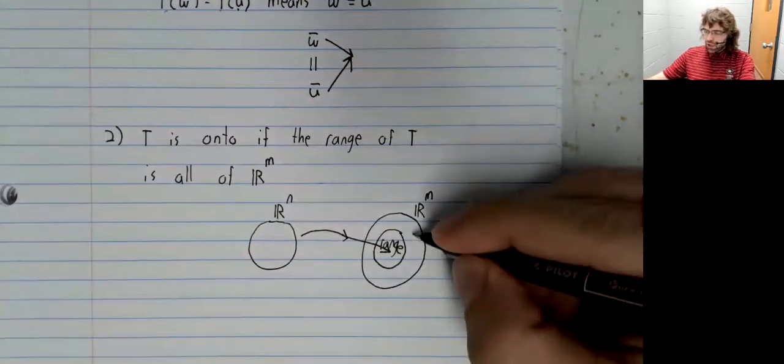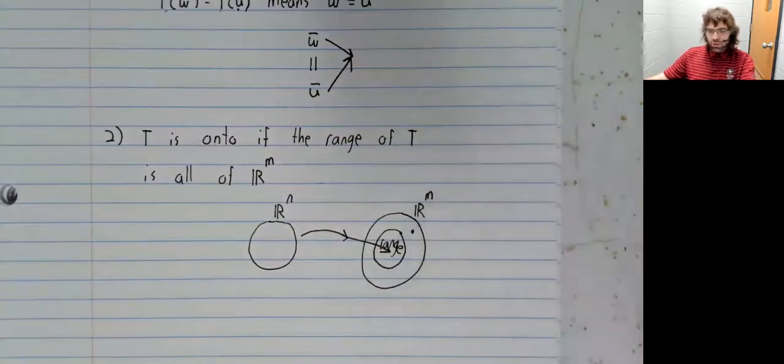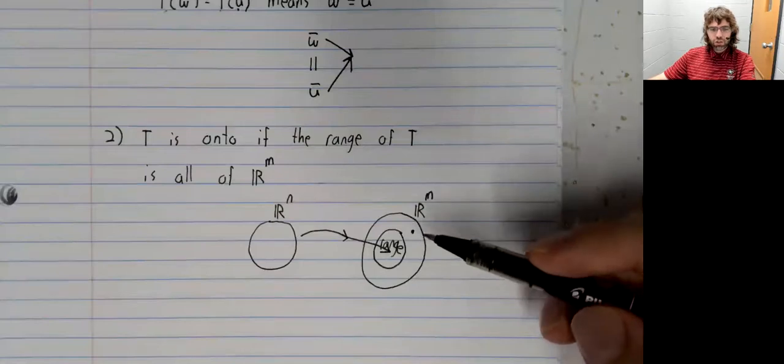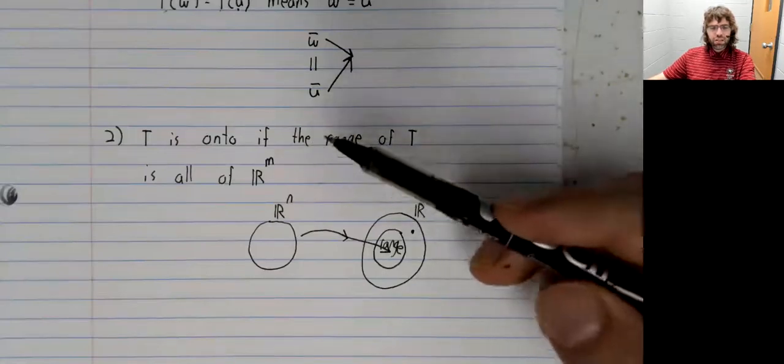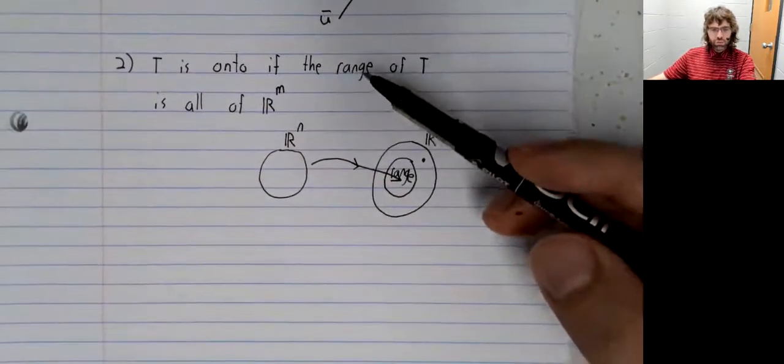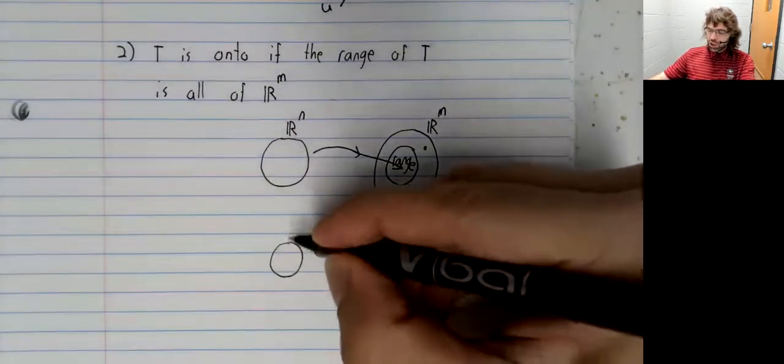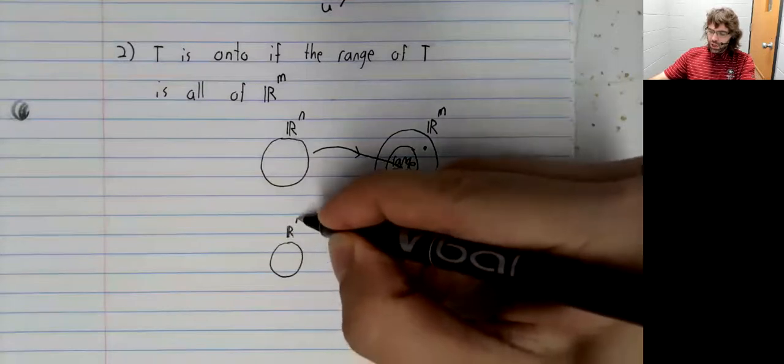And there might be vectors sitting out here that aren't in the range. T is onto if this situation does not occur.